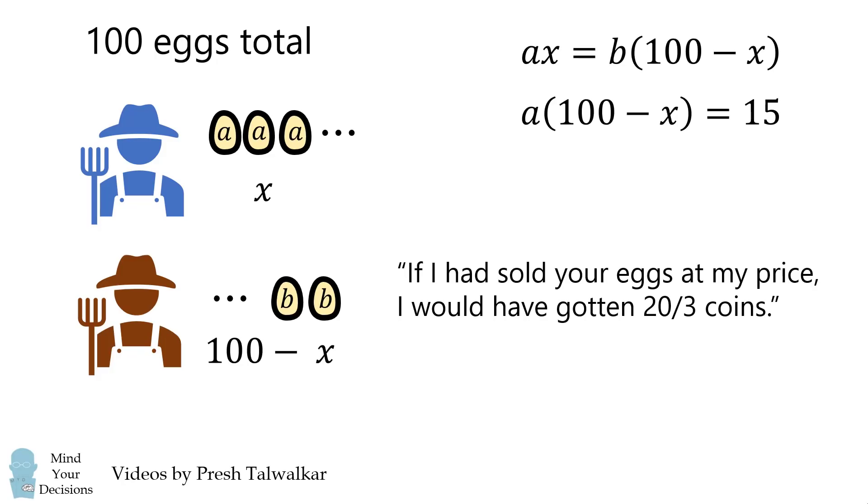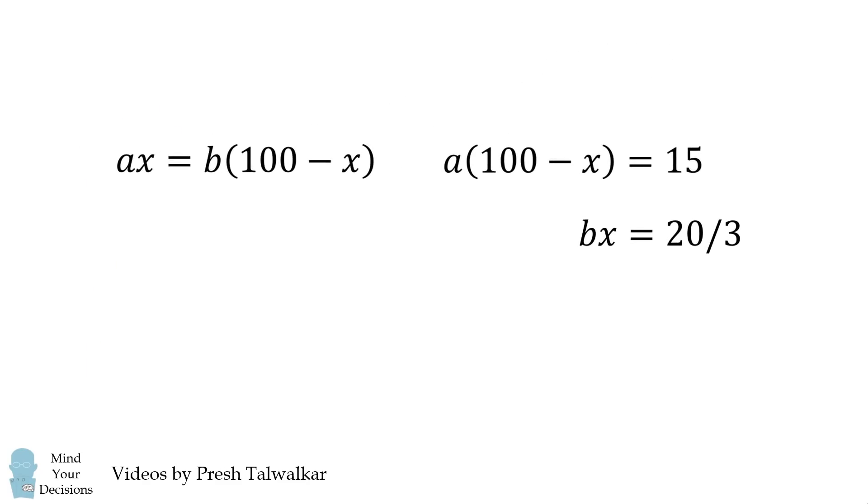Then the second farmer remarked, if I had sold your eggs at my price, I would have gotten 20 over 3 coins. This means b multiplied by x is equal to 20 over 3. We thus have 3 equations which we need to solve for x.